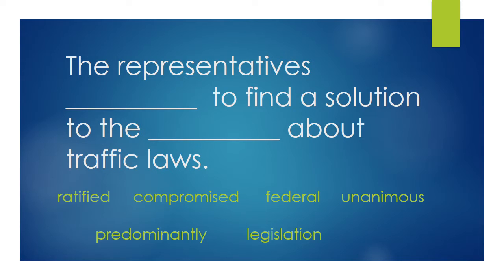I put two or three blanks in a sentence to kind of stretch our brains a little bit, but using context clues is going to be the way to go. So let's go ahead and look at this first sentence together. The representatives blank to find a solution to the blank about traffic laws. The first blank is definitely going to be an action word — the representatives did something to find a solution. So which of those words in the word bank would be an action word?